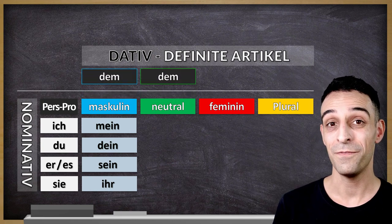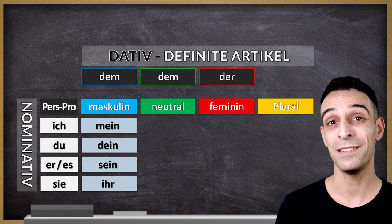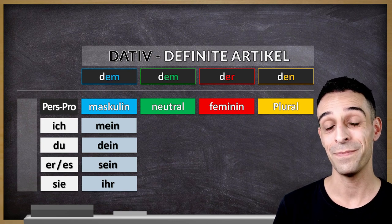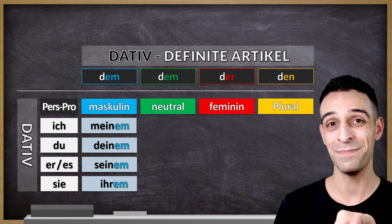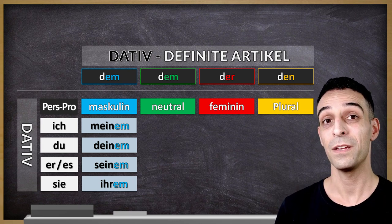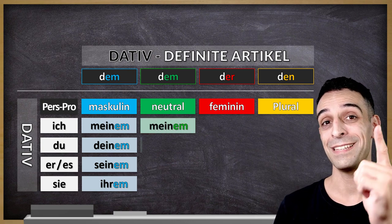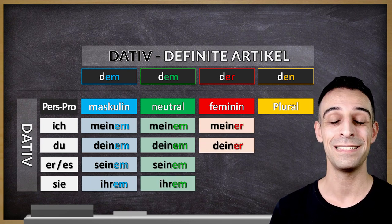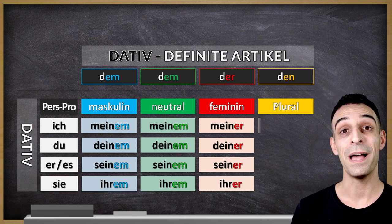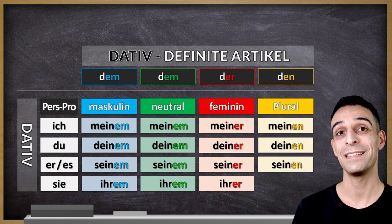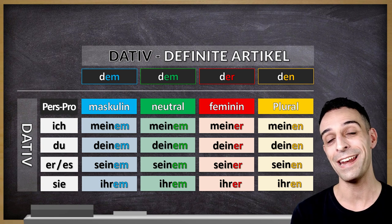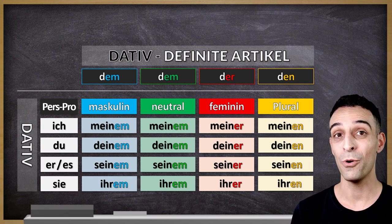Masculine and neutral: dem. Feminine: der. Plural: den. Now we form the possessive articles in dative case. Masculine: meinem, deinem, seinem, ihrem. Neutral: meinem, deinem, seinem, ihrem. Feminine follows the same pattern. You can see that the definite article endings and the possessive article endings — the last two letters — they are the same. So you only need to memorize this rule and you are good to go.